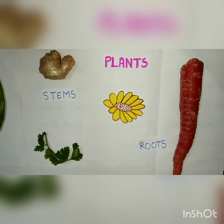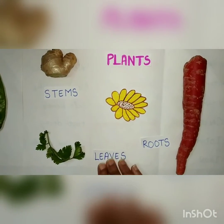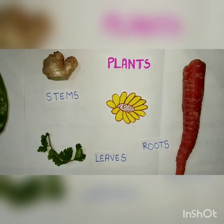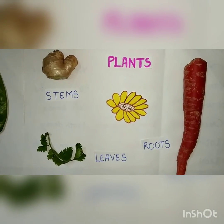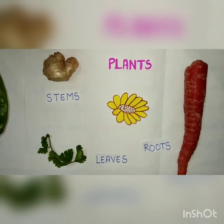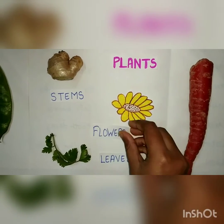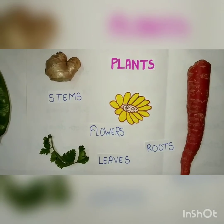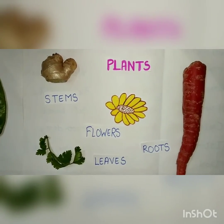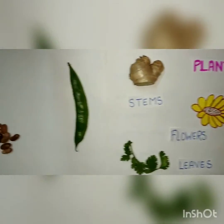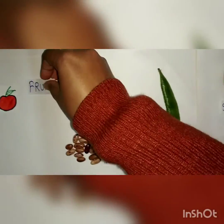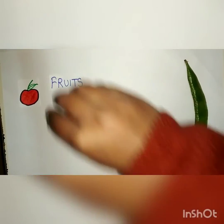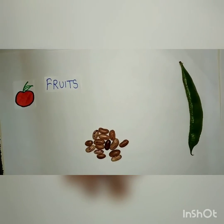Then we have leaves like mint, spinach etc. Then we have flowers, for example rose, sunflower etc. Now we have fruits which are mango, apple etc.